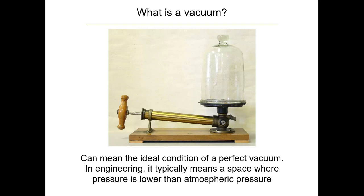That just leads us to needing varying degrees, and that's more what we're interested in in engineering. So it typically means a space where pressure is lower than atmospheric pressure. We'll divide it into different categories on an upcoming slide. There was a lot of interesting debate historically about whether a vacuum could be created — early experiments used bellows, and teams of horses tried to pull them apart. In the 17th century they were finally able to create and measure a vacuum, though people had discussed it since ancient Greece.